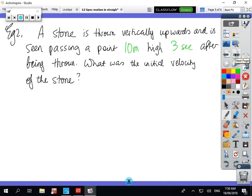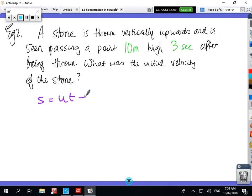Okay, next example, a stone is thrown vertically upwards, and is seen passing a point 10 metres high 3 seconds after being thrown, what was the initial velocity? Okay, so we'll use S equals UT plus 1/2 AT squared, the displacement is 10, U is what we're trying to find, time is 3, 1/2 is 1/2.